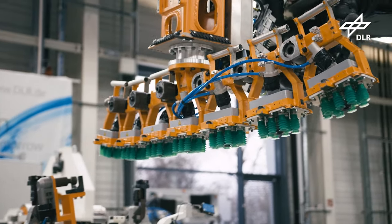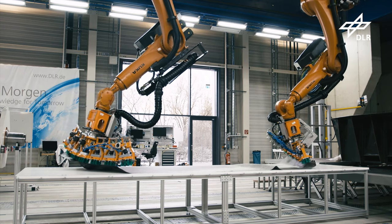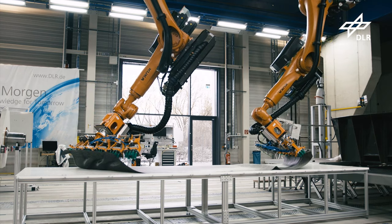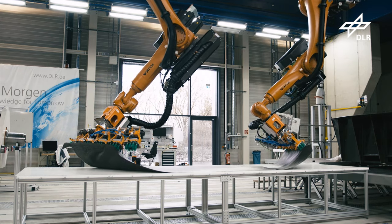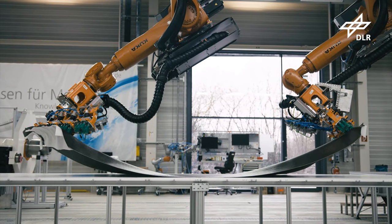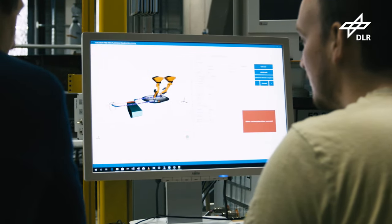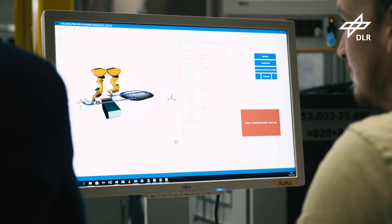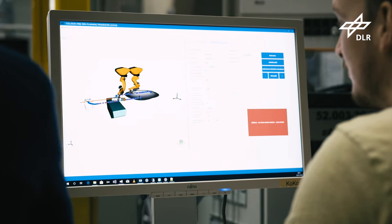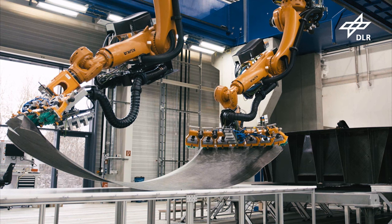The end effectors grip the long cut piece on each end and pre-drape it. An algorithm calculates autonomously the movement of both robots collision free to the target position and sends the calculated path to the robotic cell, which executes the movement.